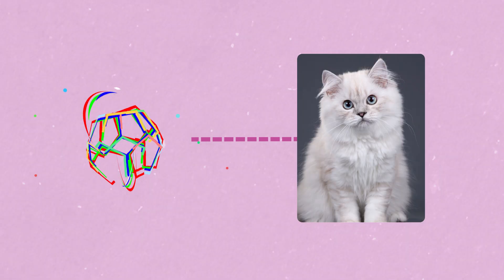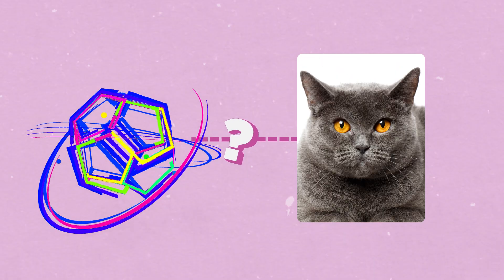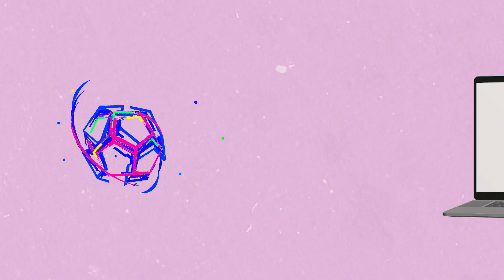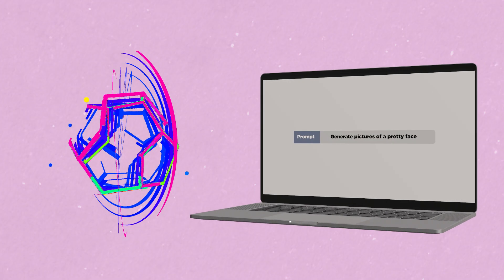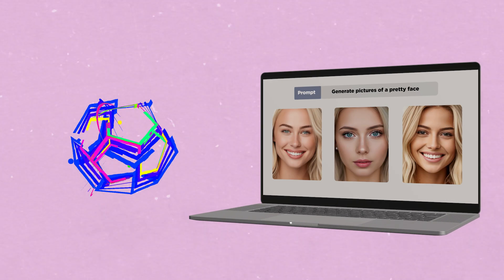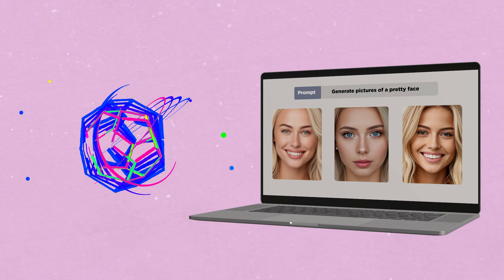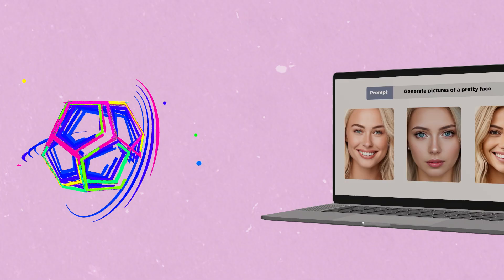An example of this is an AI trained to recognize cats. If it only learns from pictures of fluffy white cats, it may struggle to recognize cats that look different, like a short-haired gray cat. When AI is unfair, it can make existing problems worse and treat some people less fairly, especially those who are already left out or not treated equally.